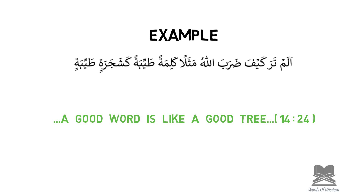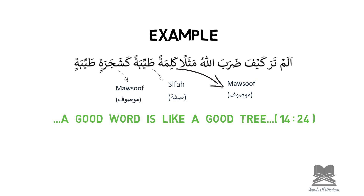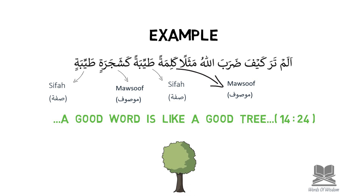In the first example, 'kalimatan' meaning 'a word' is being described as 'tayyibatan' meaning good. Kalimatan has two fatha, so the sifa tayyibatan also has two fatha — they match. In the second example, 'ka shajaratin tayyibatin': shajaratin has two kasra because of the preposition 'ka', so the describing word tayyibatin also has two kasra — the musuf and sifa match one another in both cases.